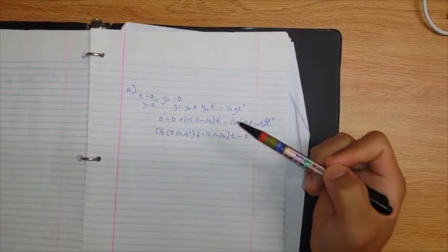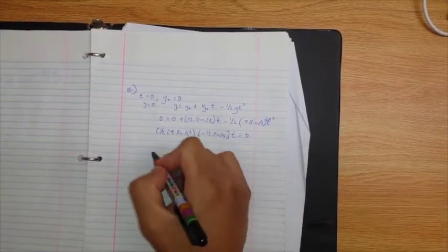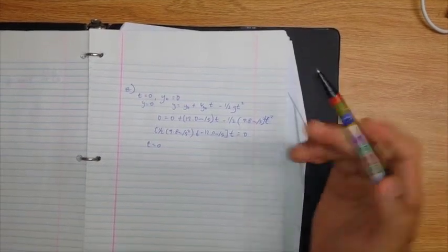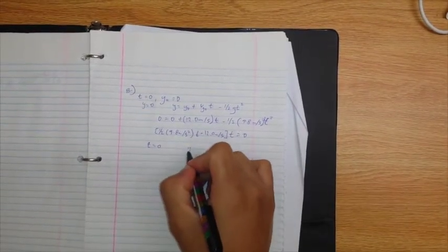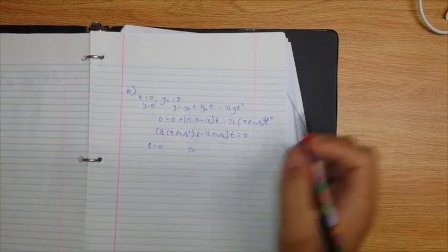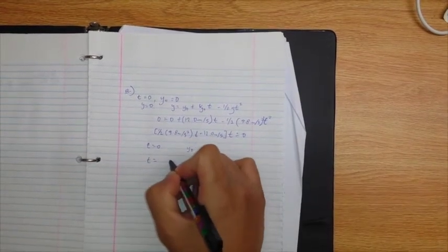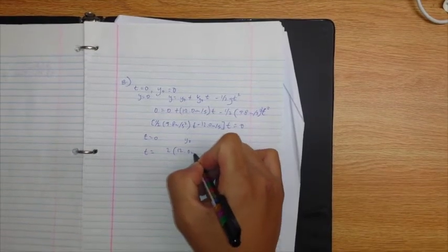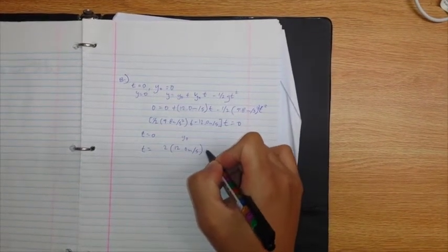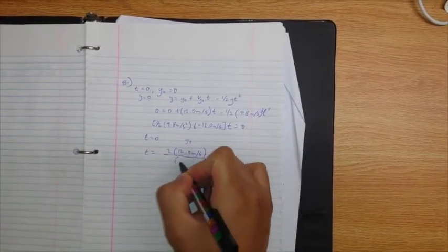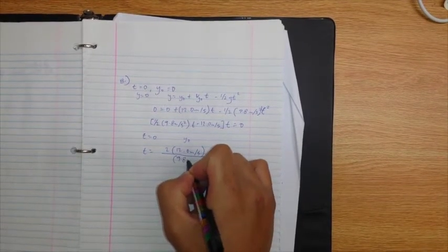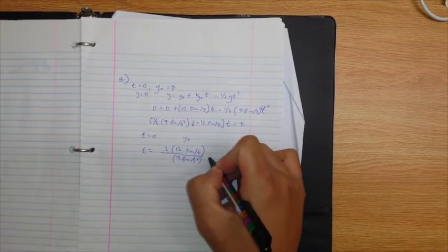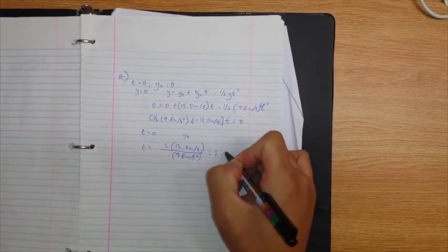There are two solutions, which is t equals 0, which corresponds to the initial point y of 0, and t equals 2 times 12.0 meters per second divided by 9.8 meters per second squared, which equals 2.45 seconds.